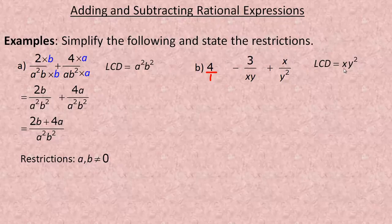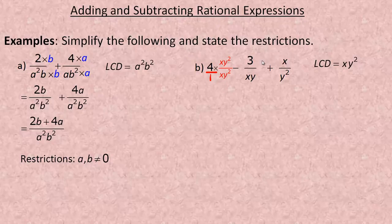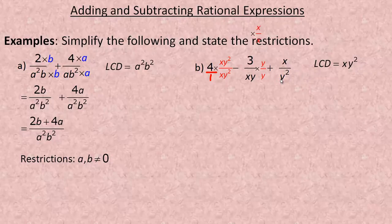I need to multiply top and bottom to get xy squared. The 4 has denominator 1, so multiply it by xy squared. The xy term is only missing the square on y, so multiply that one by y. The y squared term has the y squared but needs an x, so multiply that one by x top and bottom.